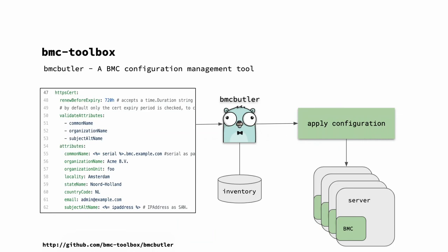Another tool in the BMC toolbox is BMC Butler, focused on configuration for BMCs. It retrieves data from the Dora inventory and attempts to configure those BMCs, maintaining consistent state across all baseboard management controllers. Instead of configuring only during initial installation, Butler handles ongoing updates — like changing the CNAME for your syslog server or updating passwords across all vendors simply.